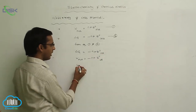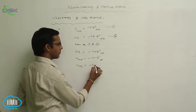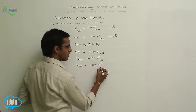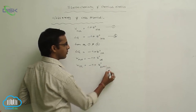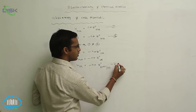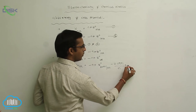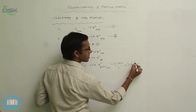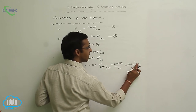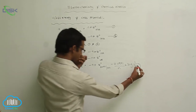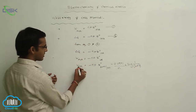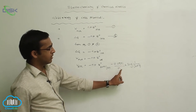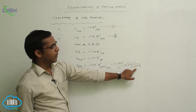We already know that E naught cell can be expanded using the Nernst equation: E naught cell equals the reduction potential for the Zn²⁺/Zn couple minus 0.0591 divided by N, times log of the concentration. Since pure metal concentration is 1, this becomes 1 over the Zn²⁺ concentration. So W maximum equals minus NF times E naught minus 0.0591 over N times log of pure metal concentration (1) over the reactant concentration.